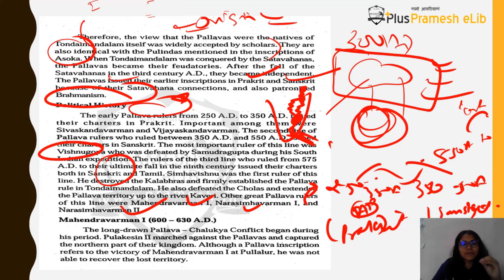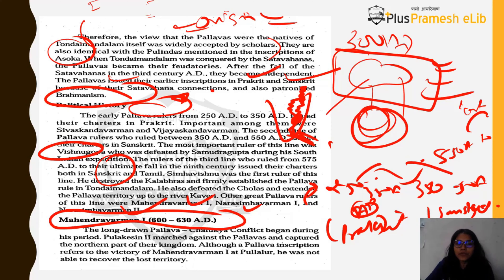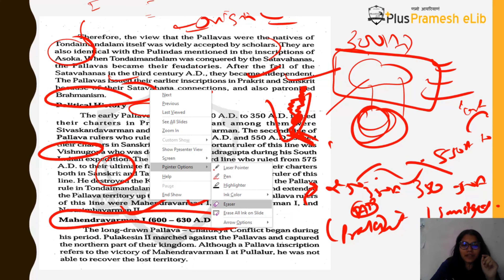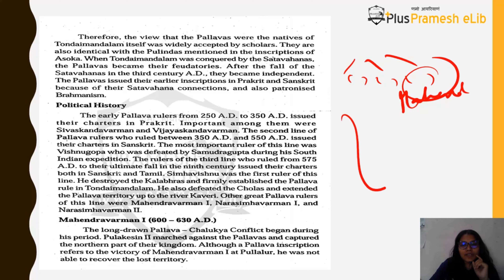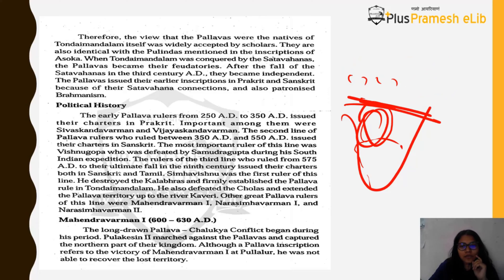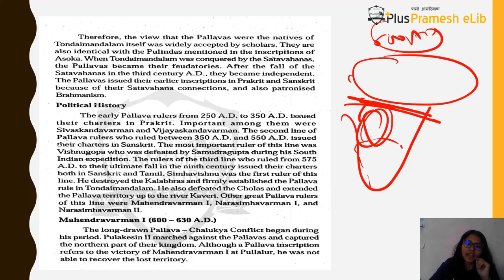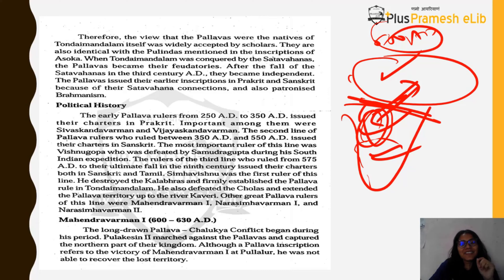Now we take each Pallava ruler in detail, starting with Mahindra Varman. This is also the time of the long-drawn Pallava–Chalukya conflict. During around 600 AD, Harsha was in the north, Chalukyas in the central area, and Pallavas in the south. The Chalukyas were fighting Harsha in the north and Pallavas in the south simultaneously. The Pallava–Chalukya conflict began during this period. Pulakeshin II, the Chalukyan king — whose court poet was Ravi Kirti, who wrote about the Harsha–Pulakeshin II war — marched against the Pallavas.